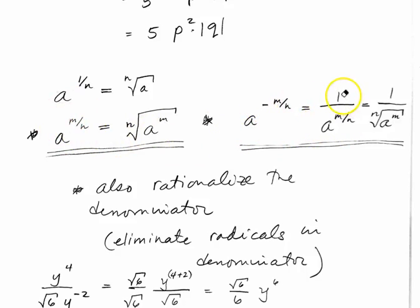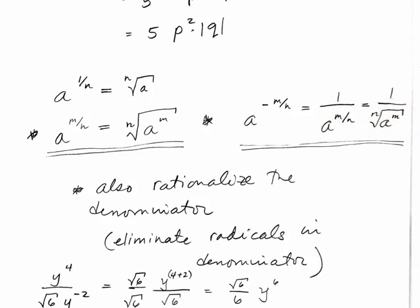And a to the negative m over n, that would just be 1 over a to the mn, which would be 1 over the nth root of a to the m. And then they also talk about, in the textbook, about rationalizing the denominator. And that would be eliminating radicals in the denominator.